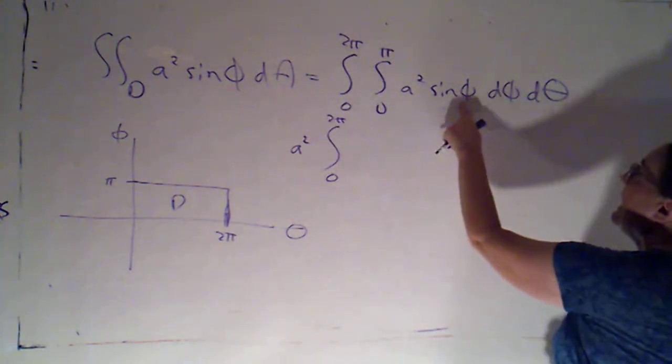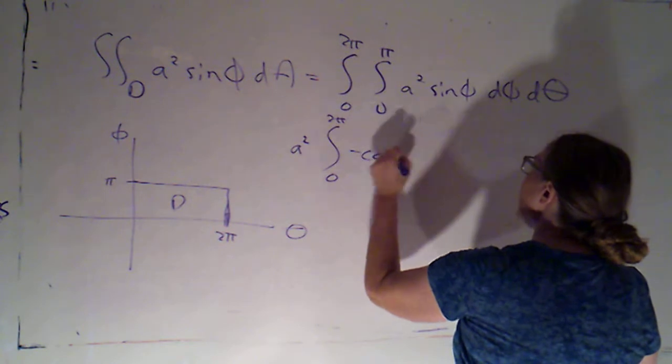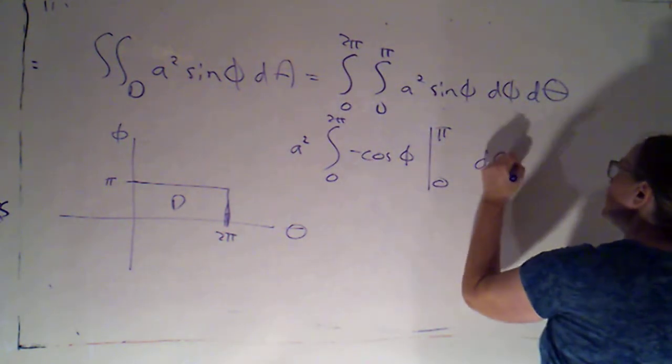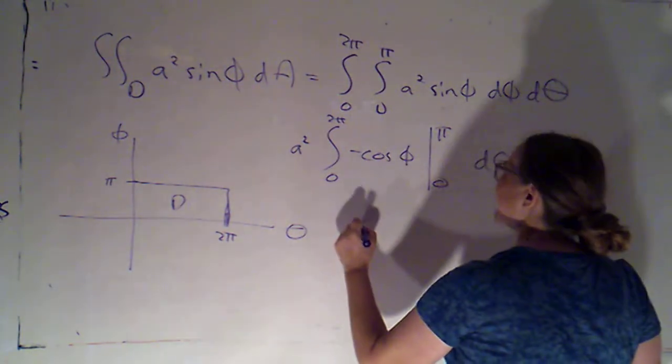Integral from zero to two pi. An antiderivative of sine phi would be negative cosine phi, and that's going to be evaluated between pi and zero. And then we'll finish up with integrating d theta.